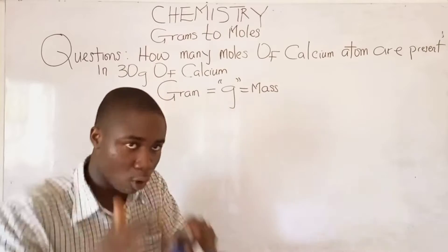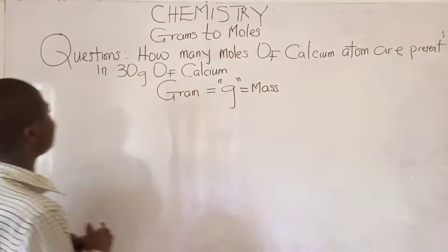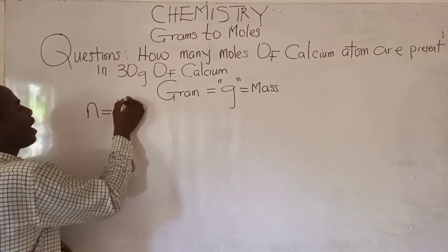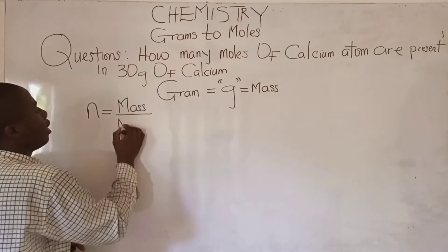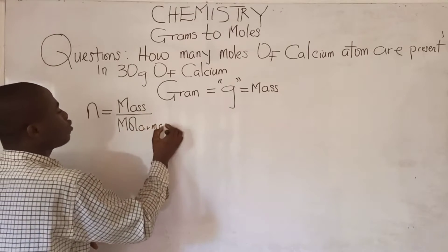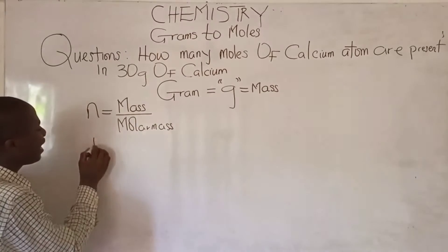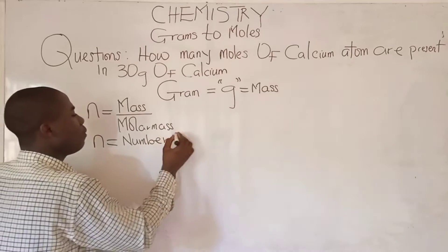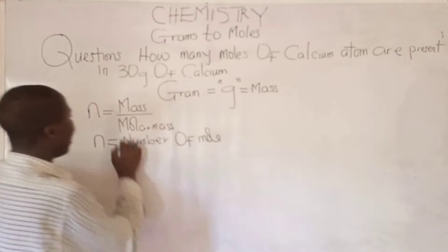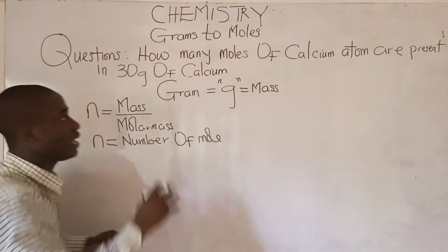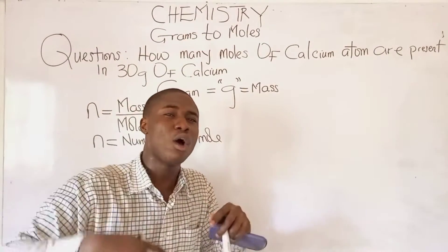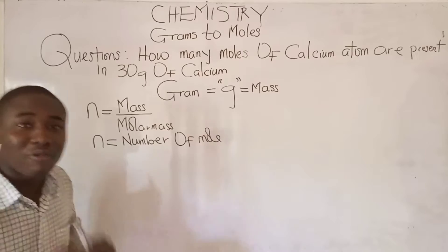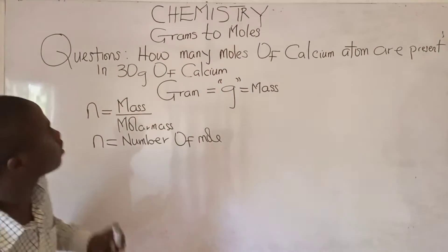There is a simple formula that must be noted. The formula is: n is equal to mass over molar mass, where n is the number of moles, mass is the given mass, and molar mass here is basically the molar mass of the element or the molar mass of the compound. This formula is very important in converting grams to moles.